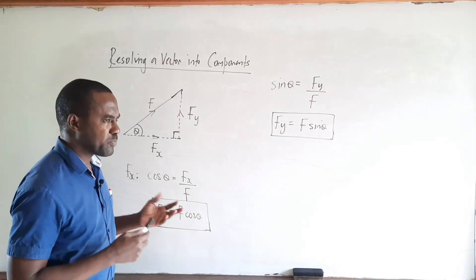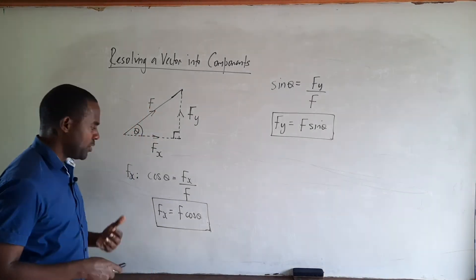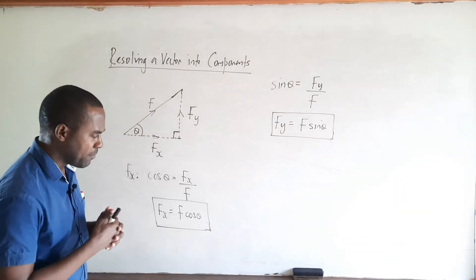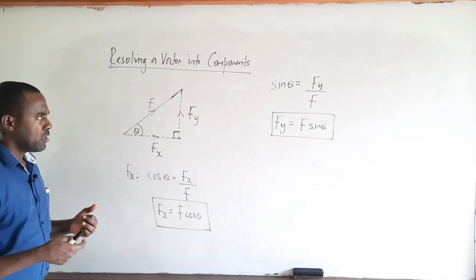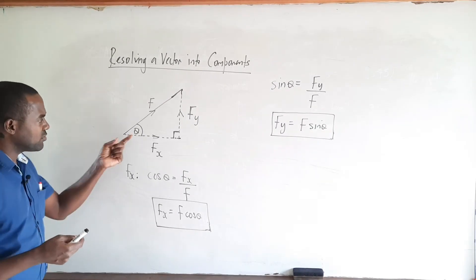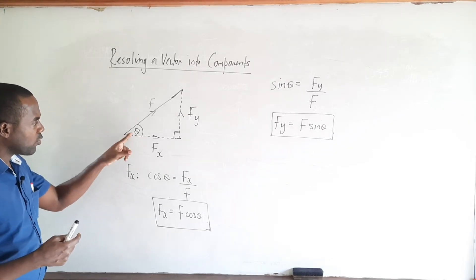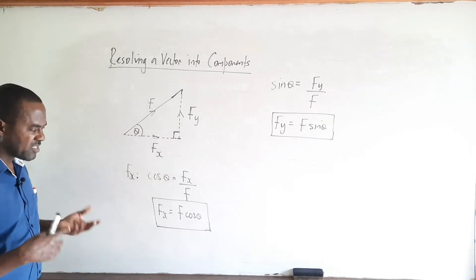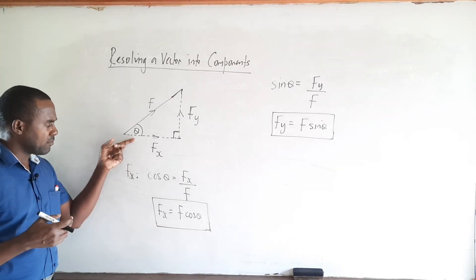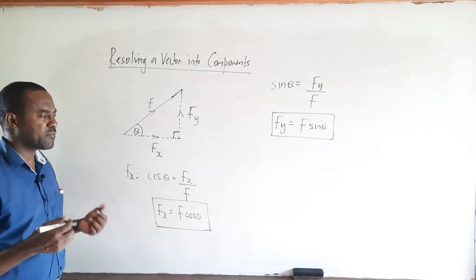Even though we've expressed these components in terms of the force and the trig ratio of the angle, we need to be careful when dealing with the angle. Sometimes students tend to memorize the components, but that doesn't always work because the angle could be given differently. In this case, the angle was given with respect to the horizontal, so the horizontal component is in terms of cosine and the vertical component is in terms of sine. The component adjacent to the angle is in terms of cosine, and the other component is in terms of sine.